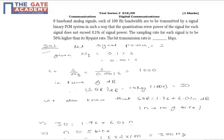Let us assume the signal power is equal to S. Our quantization error NQ is equal to 0.1% of S, which is equal to 0.001S.